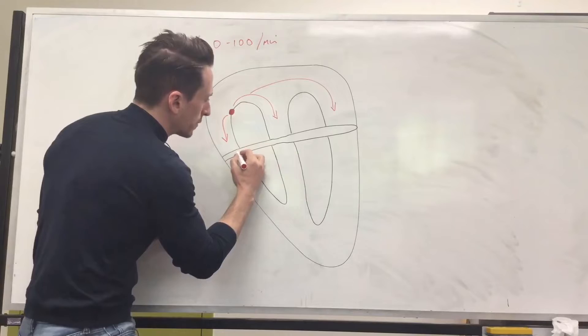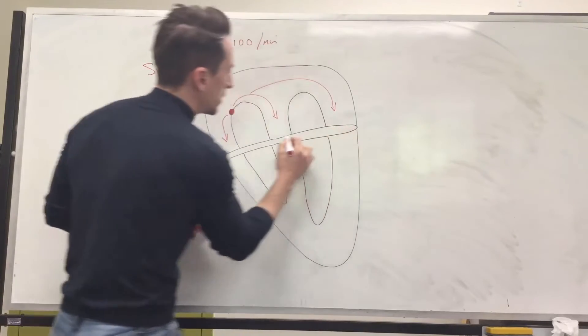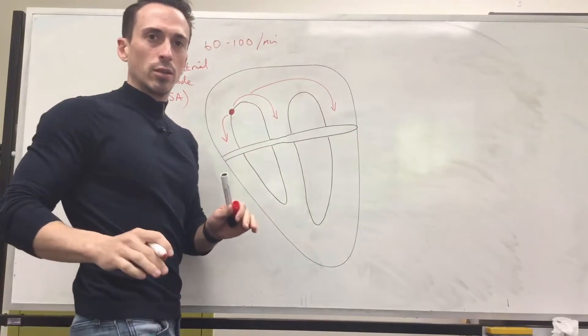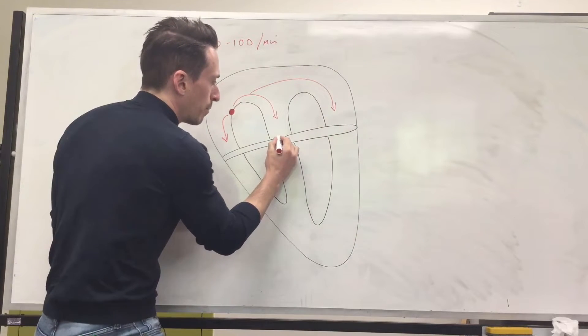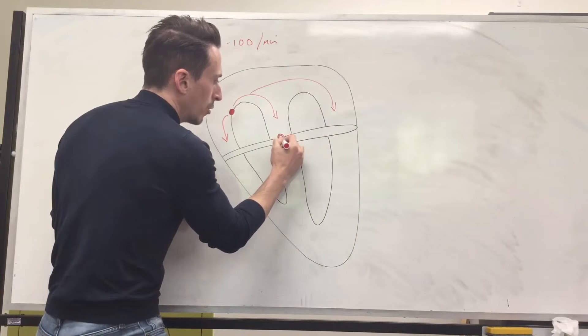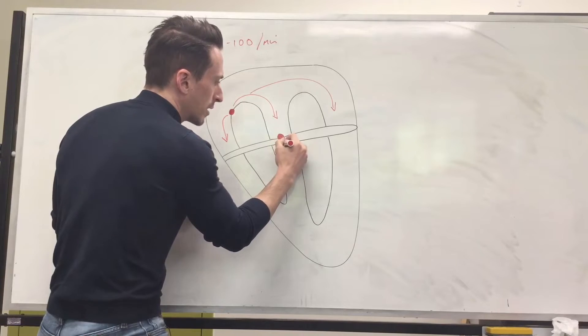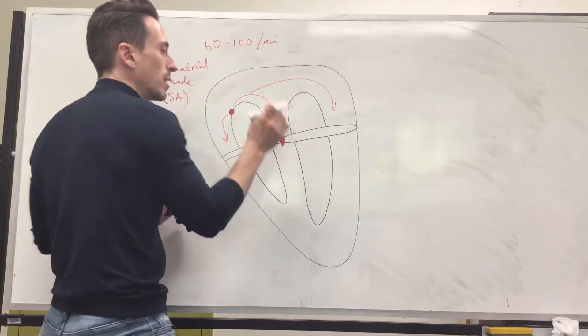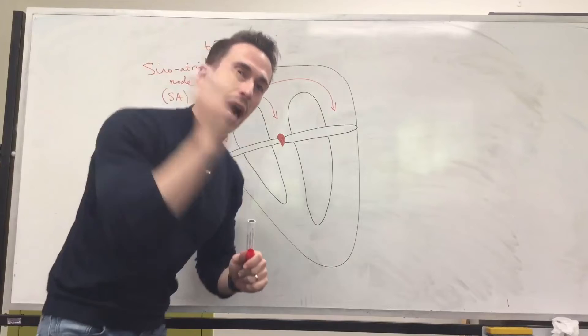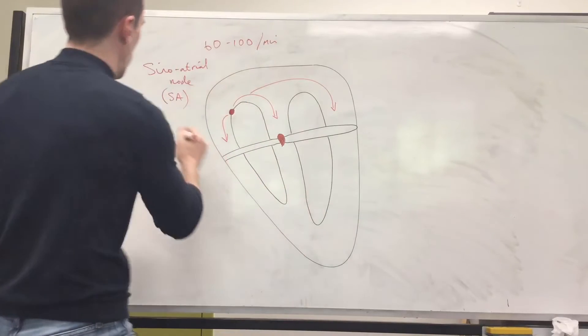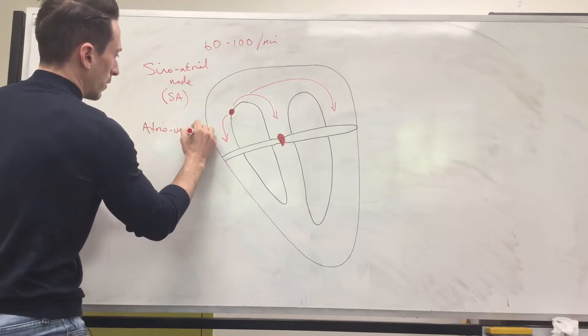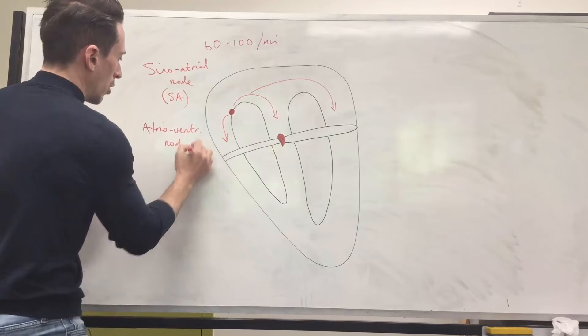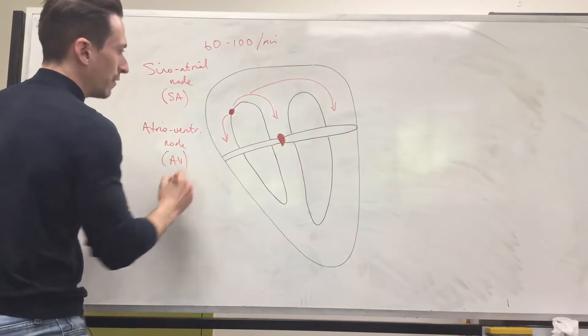Now the next thing is we've got this bit of tissue right here. This tissue stops the electrical signal. It stops the electrical signal and funnels it to one particular point right here. Another node, another group of specialized cells which sit between the atria and the ventricles. And therefore it's called the atrioventricular node. Atrioventricular node. Also just termed the AV node.